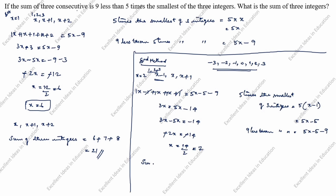What is the sum of the three integers? We compute x minus 1 plus x plus x plus 1. With x equal to 7: 7 minus 1 is 6, plus 7, plus 7 plus 1 is 8. The minus 1 and plus 1 cancel, giving 7 plus 7 plus 7 equals 21. You can see that both the first and second method give the same answer of 21, but the concept is different.